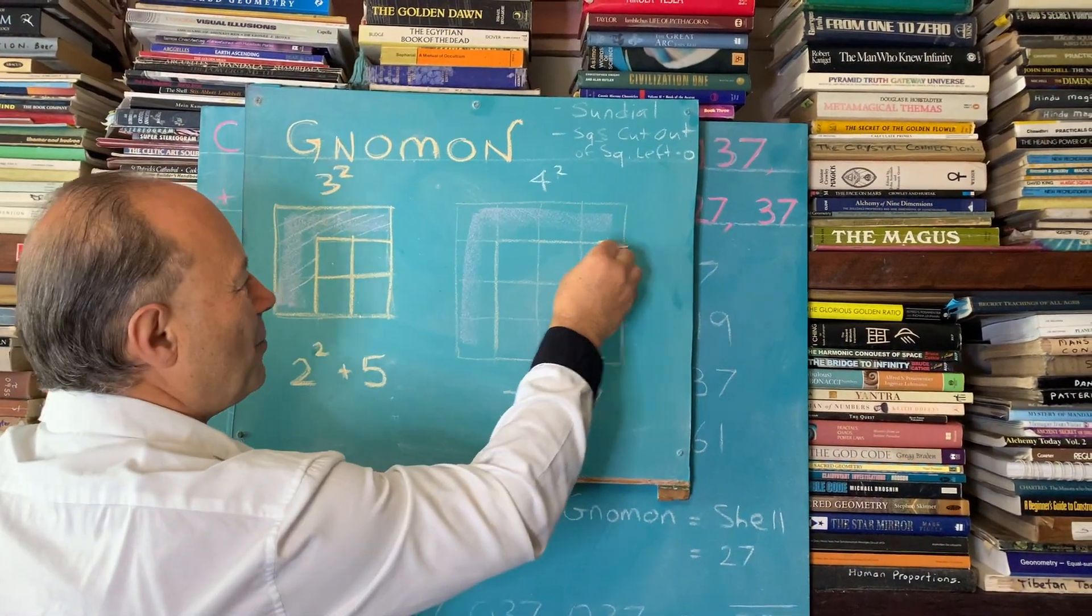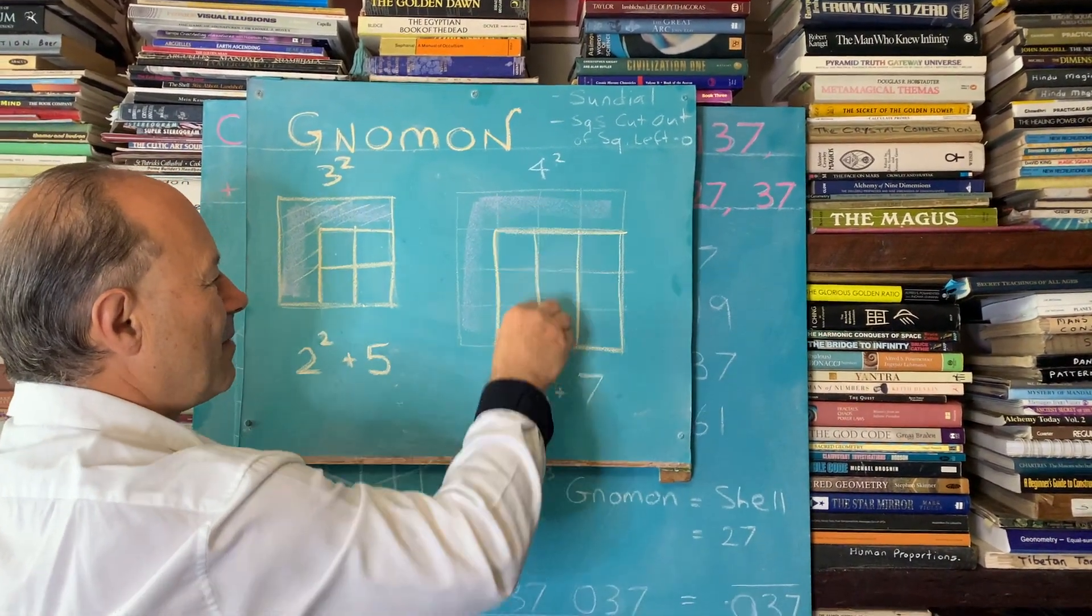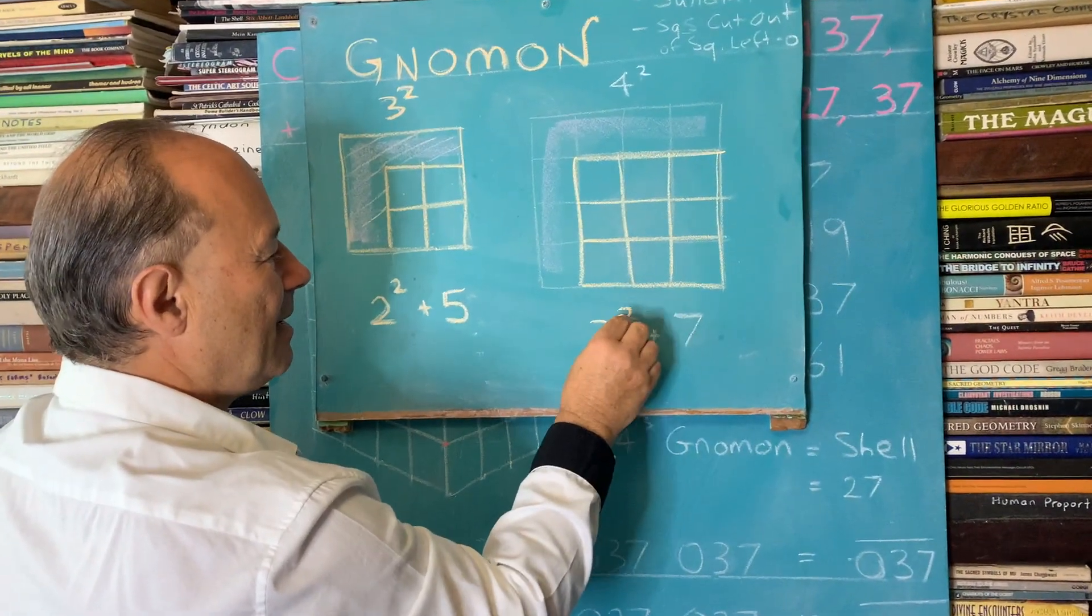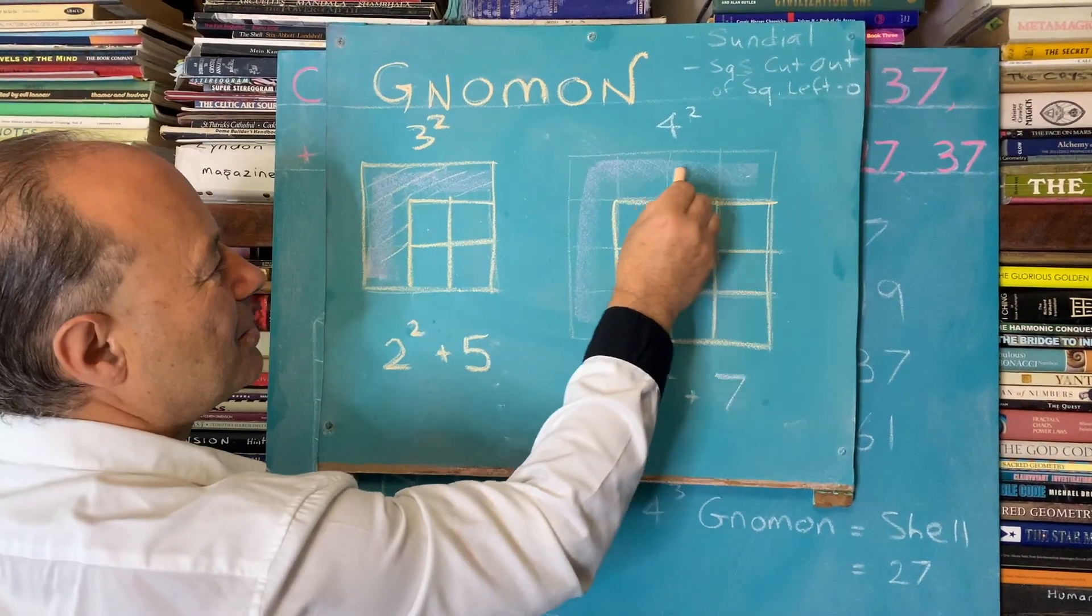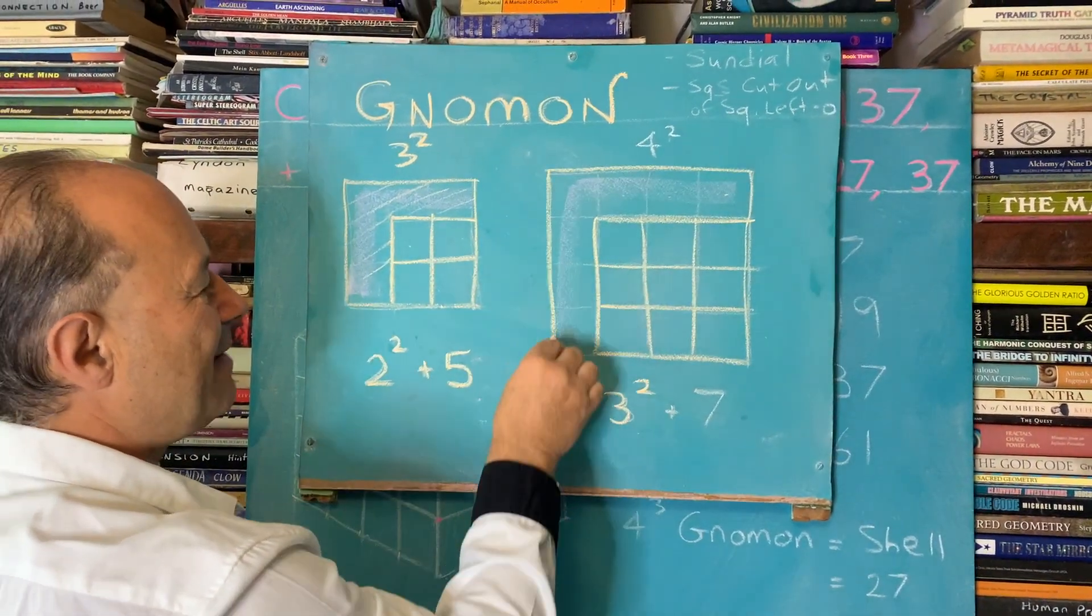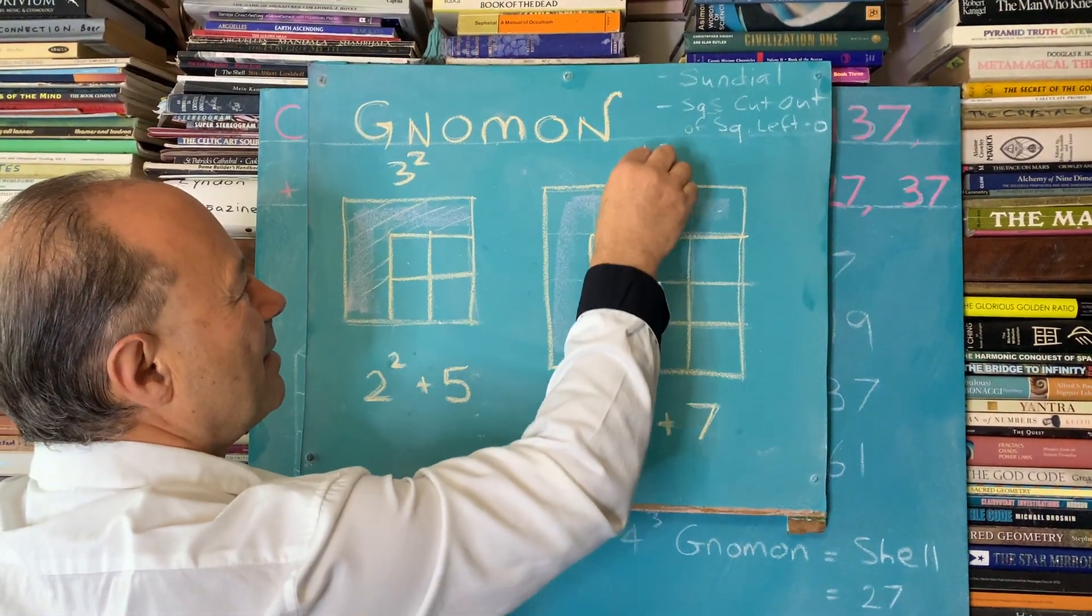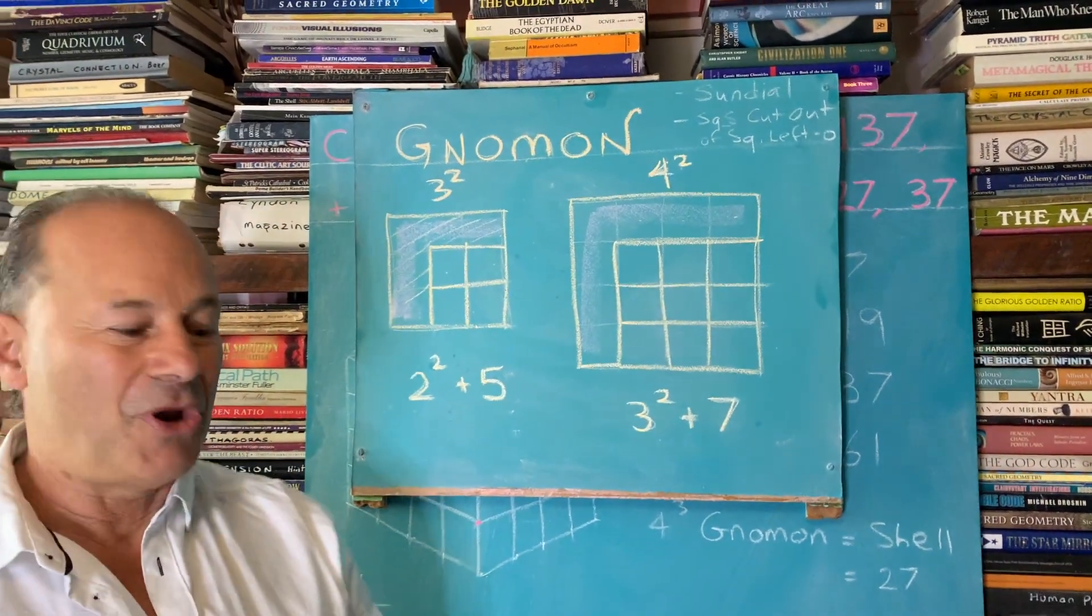So to understand how to get 4 squared, we say it is 3 squared. We've got 3 squared is 9. We've got the 9. There's the 3 squared. But we're going to add to it this L shape, this gnomon. 1, 2, 3, 4, 5, 6, 7. So by adding 7 to the 3 squared, we end up with 4 squared. So that's a basic introduction into gnomon.